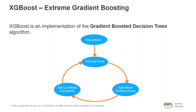XGBoost cycles by repeatedly building new models and combining them into an ensemble. The cycle starts by taking an existing model and calculating errors for each observation in the dataset. A new model is built to predict these errors, and its predictions are added to the ensemble. To make a prediction, we add predictions from all previous models, calculate new errors, build the next model, and add it to the ensemble. Initial predictions can be pretty naive — subsequent additions will address those errors.